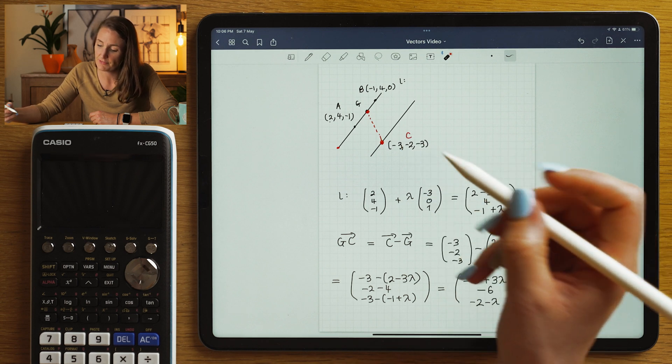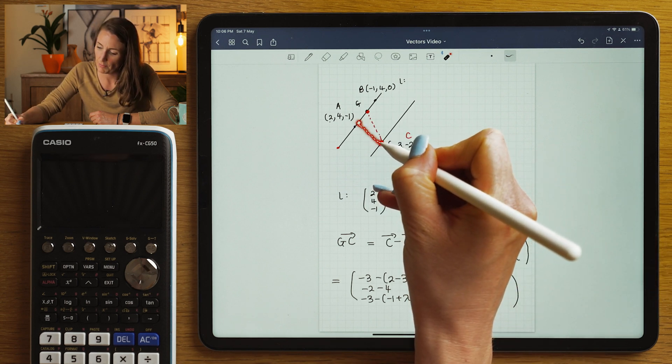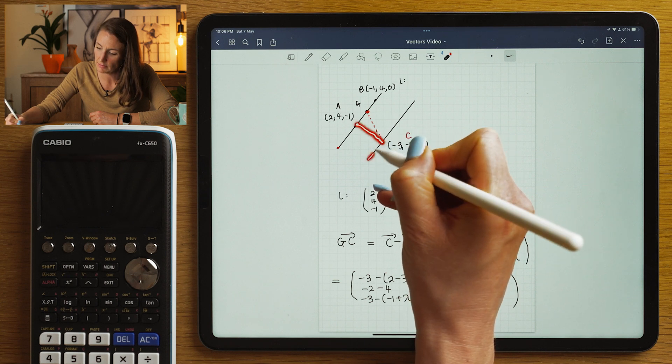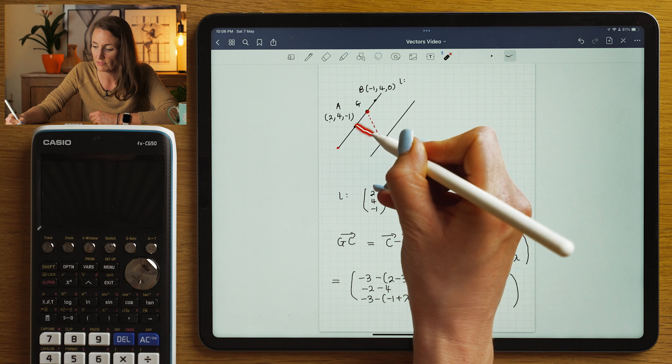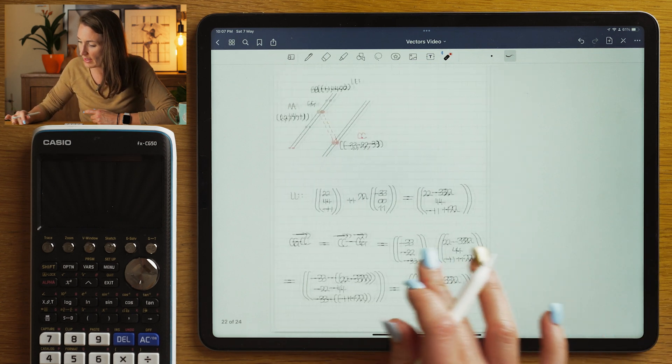So -3 minus 2, -3 minus 2 is -5 plus 3λ, -2 minus 4 is -6, and -3 minus -1 would be -2 minus λ. We're going to find a specific lambda that will tell us which point here would be perpendicular to this line if we joined it up to C, and therefore we'll know the vector that will take us from here to here, and all we need to do then is look at how long it is.